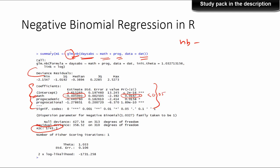The second independent variable is the different programs. We have three programs: program academic, program vocational, and program general. Program general is the reference category, and program academic and program vocational are compared to it. The estimate for program academic is negative 0.44, meaning the difference in effect between academic and general program is negative 0.44. Similarly, the difference is negative 1.27 when comparing program vocational to program general.